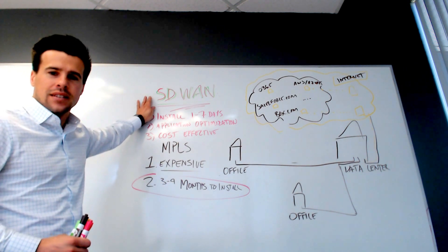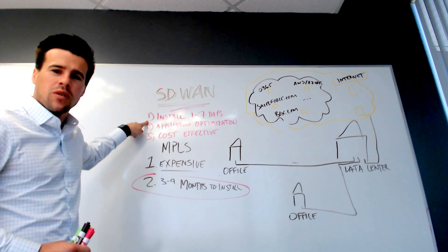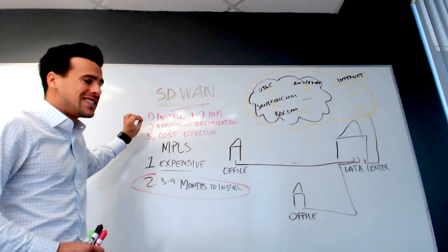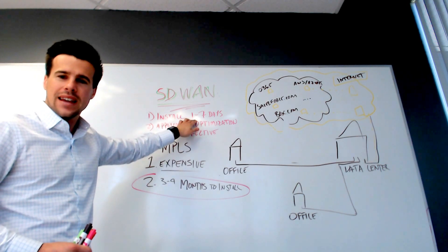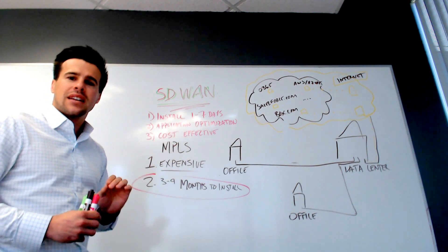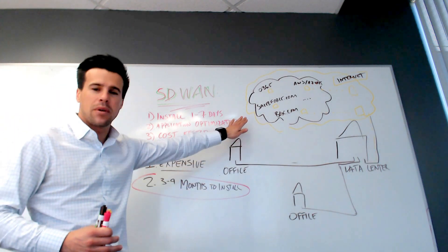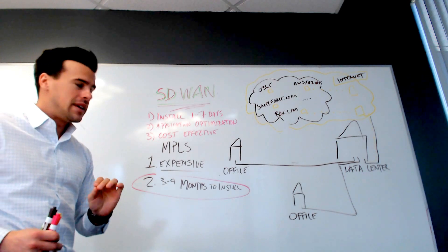SD-WAN is. SD-WAN is software-defined WAN. Now, most important thing is agility. You can install an SD-WAN connection—all you need is an internet connection—in one to seven days. That is disruptive, and it allows you to roll out applications immediately, which is so important to be agile.